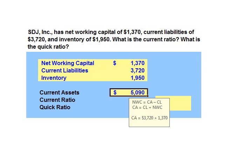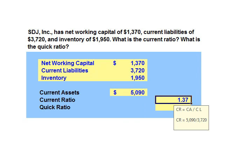Now let's go ahead and calculate our current ratio. Our current ratio is current assets divided by current liabilities. The current ratio is $5,090 in current assets divided by $3,720 in current liabilities.